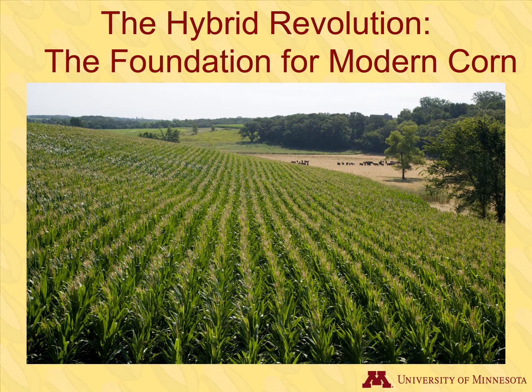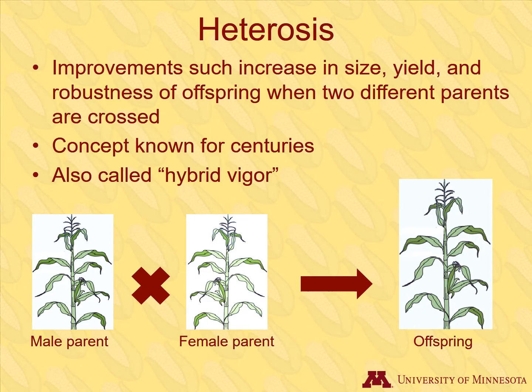The next step in corn breeding beyond open pollinated varieties was revolutionary: the discovery of the process for creating corn hybrids. This provides the foundation for the modern corn we have today. One important concept that helped lead to this breakthrough was heterosis, which had been known about for a long time. When two parents with traits that are greatly different from one another are crossed, the progeny are often superior to the parents in size, yield, and robustness. This concept also held true with corn, as scientists discovered in the 1870s.